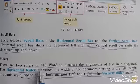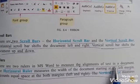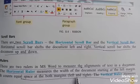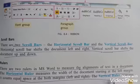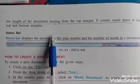There are two rulers in MS Word to measure the alignment of text in the document. The horizontal ruler measures the width of the document and the vertical ruler measures the length of the document.